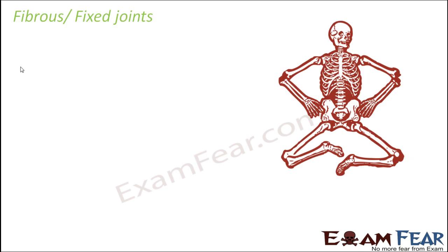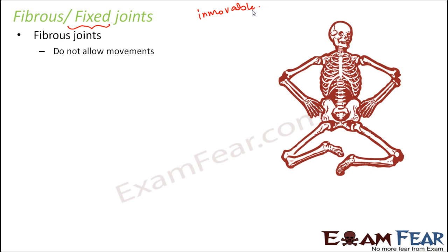Let us start with fibrous joints, which are also called fixed joints. The name itself says that they are fixed because they are immovable. These joints do not allow any kind of movement. This proves that it is not necessary that wherever you have a joint there has to be a movement, because if the joint present is a fixed joint, there will be no movement.